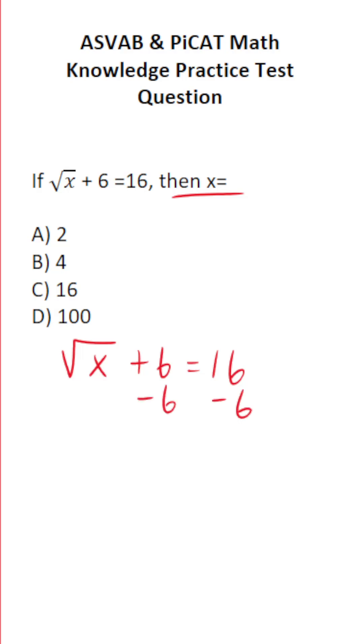So let's subtract 6 from both sides. This crosses out, leaving you with the square root of x over here equals 16 minus 6 is 10.